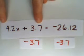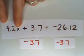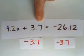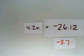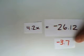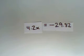Let's simplify what's over here on the left. 4.2x plus 3.7 minus 3.7. What we have left is 4.2x. Simplifying on the right, negative 26.12 minus 3.7 is negative 29.82.